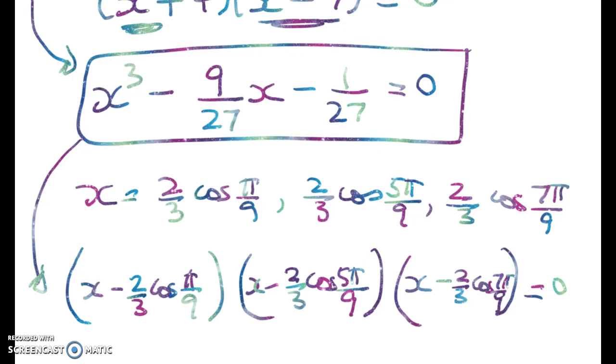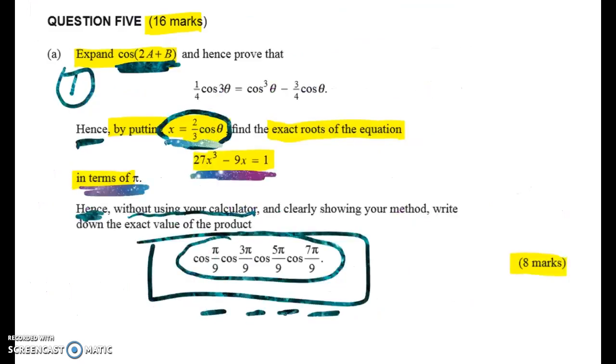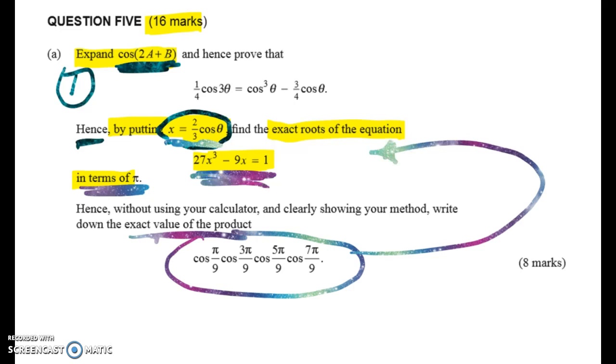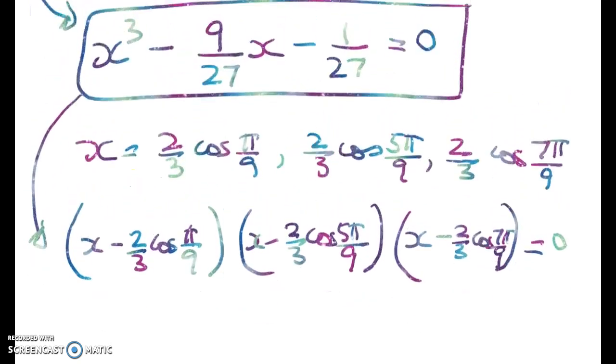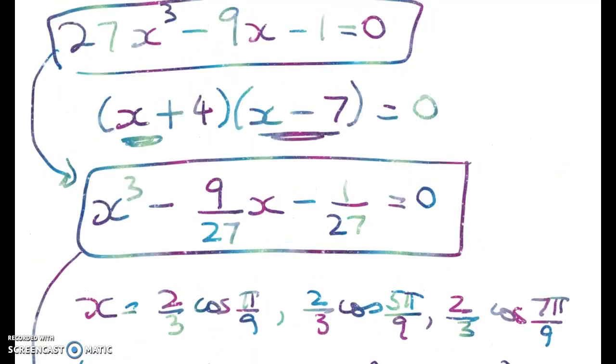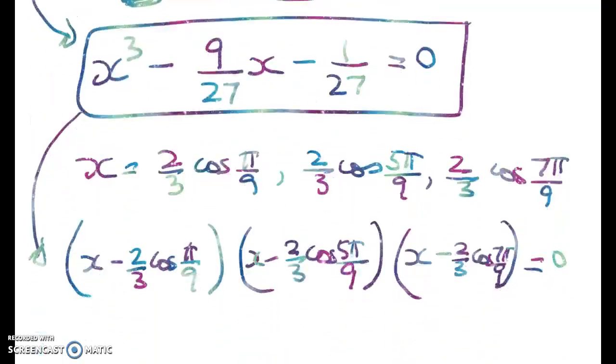Now you're probably going, why on earth did she want to do that? Well, it's because of the last part of the question, because we are now asked to do this without using a calculator, we have to write down the exact value of this product. And somehow we're going to get this out of the fact that we've found roots to this equation that have got this one, this one, and this one. So if we look at what it means that they're roots of the equation, we can match up the coefficients. We know that, going back to my simple quadratic up here, this times this is going to give me the last term in my expansion. And in this case, it'll be negative 28.